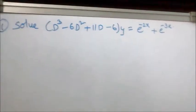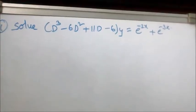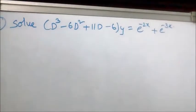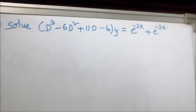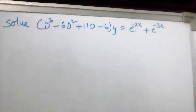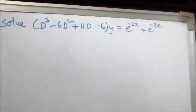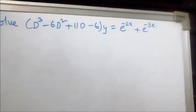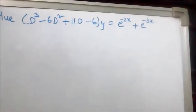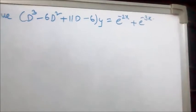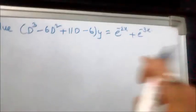Let's see the problem. They have given the problem as: solve (D³ - 6D² + 11D - 6)y = e^(-2x) + e^(-3x).